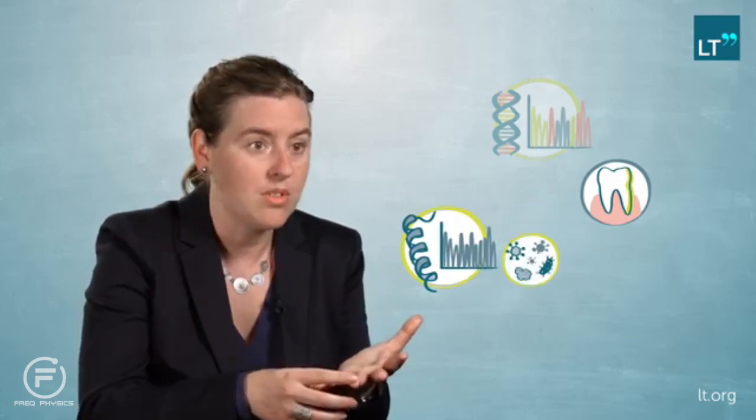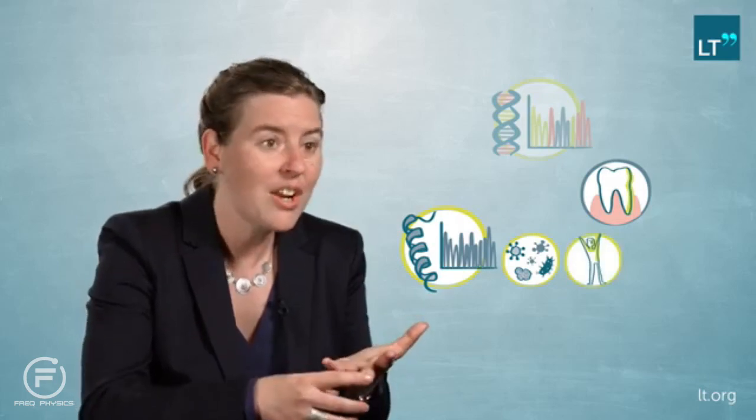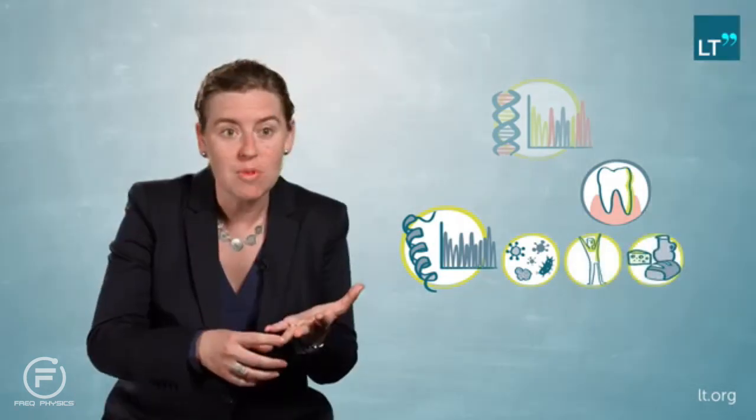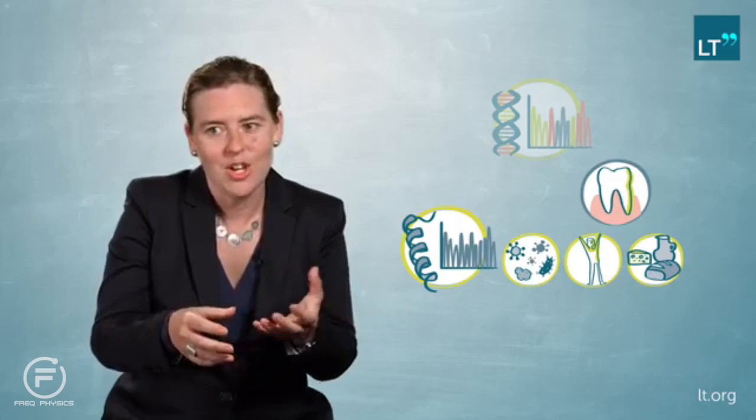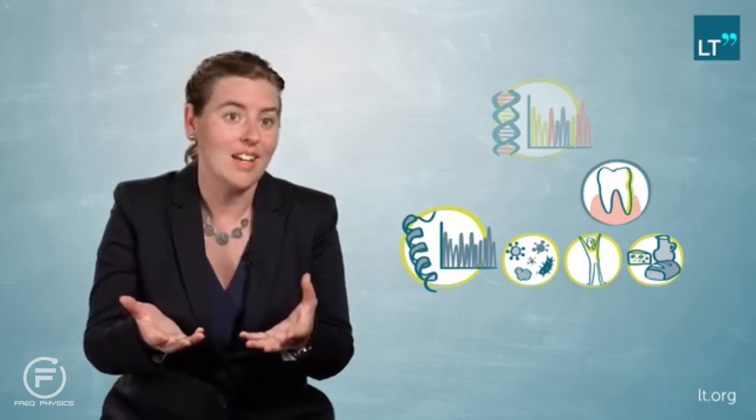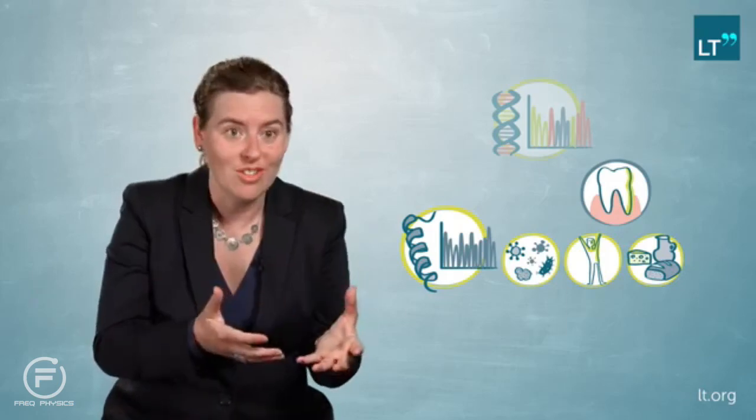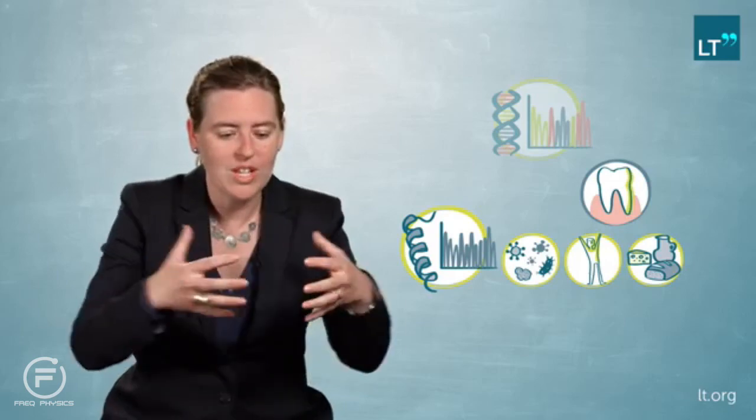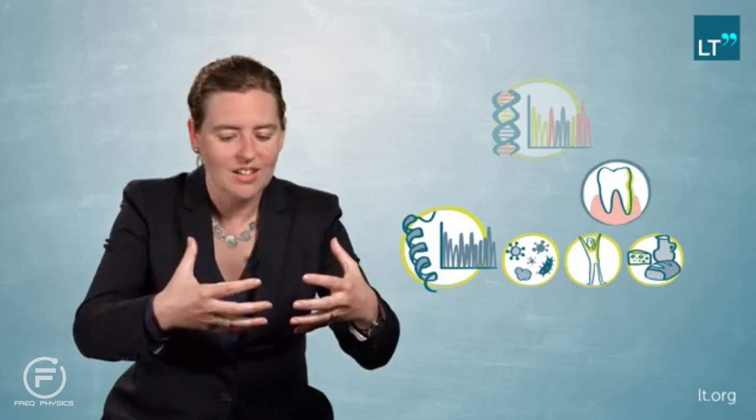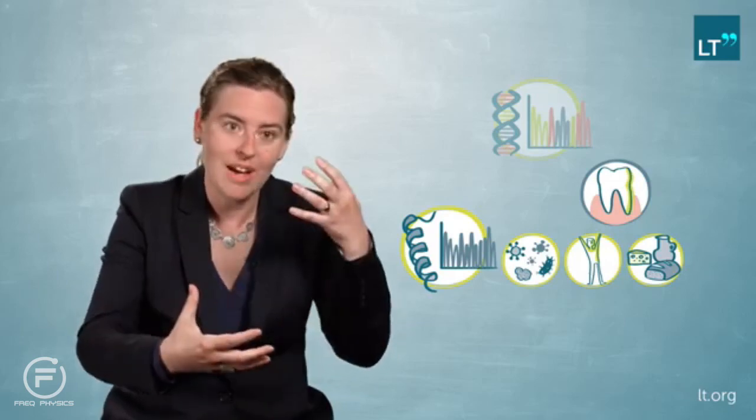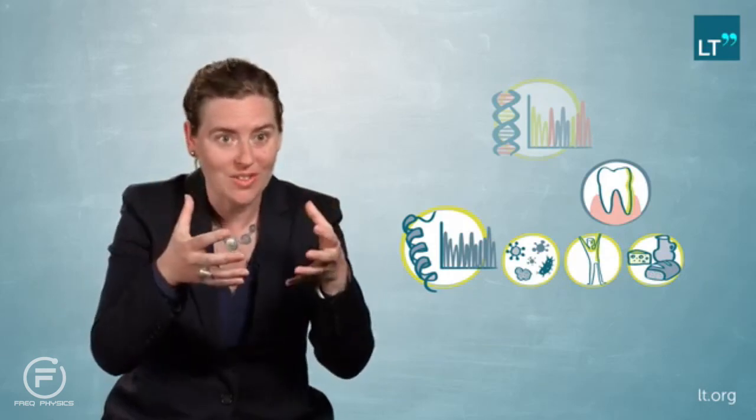We don't just find a narrow range of proteins, which is what we typically find from both dentin or bone. We find this incredible array of proteins that come from the bacteria, that come from the human itself, and also from diet. With the human proteins, we don't just get run-of-the-mill proteins. We get very exciting proteins, like immune-associated proteins. And so we're able to reconstruct this entire relationship between the microbes and the host right there on the surface of the teeth.